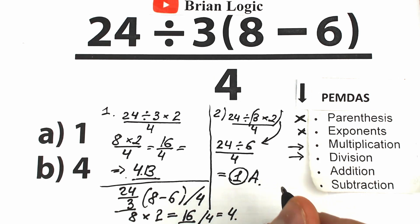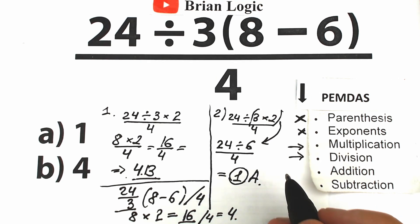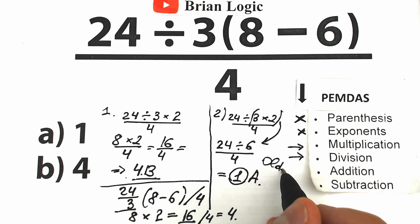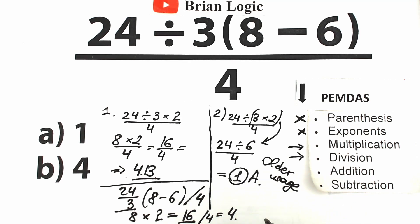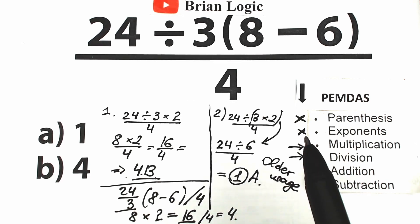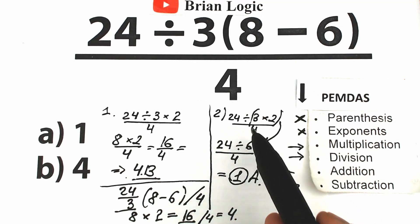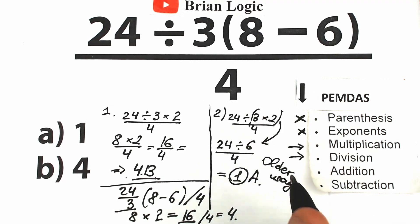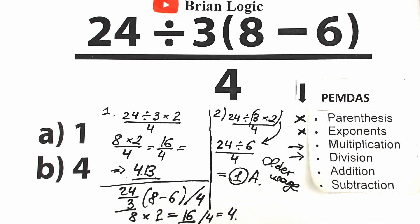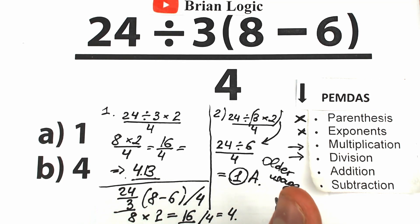Option A is not correct in modern math — it reflects an older usage. About 100 years ago, people divided 24 by the whole entire product, but that's not how calculators work today. You can verify this solution in your calculator.